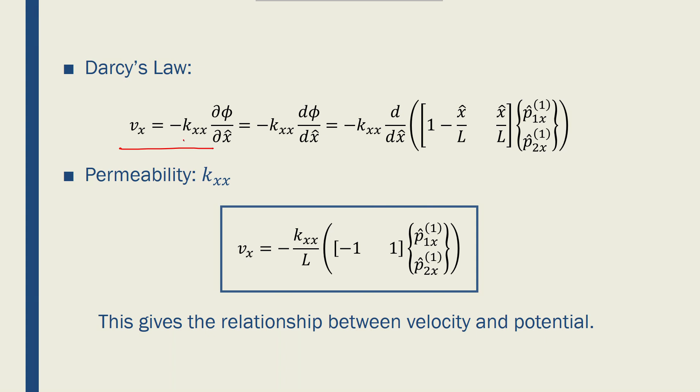Because we're setting this equation or this problem in 1D, we can replace the round or partial with d. So it could be minus kxx times dφ over dx. And then we can replace the potential function equation here and find this derivative with respect to x.